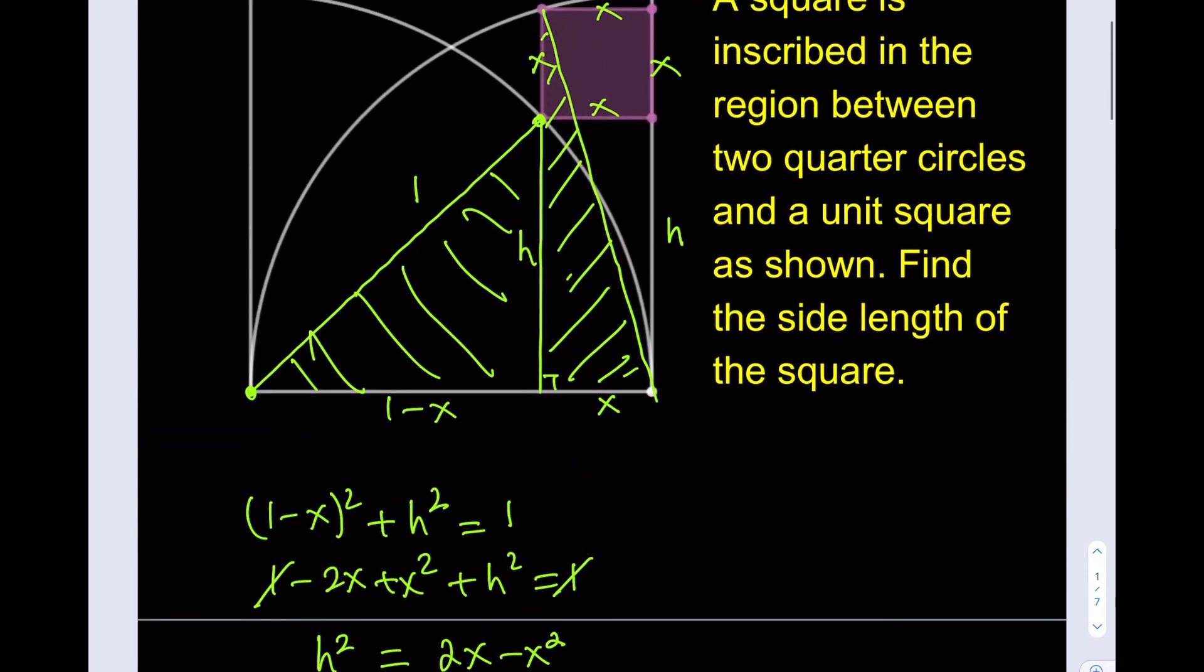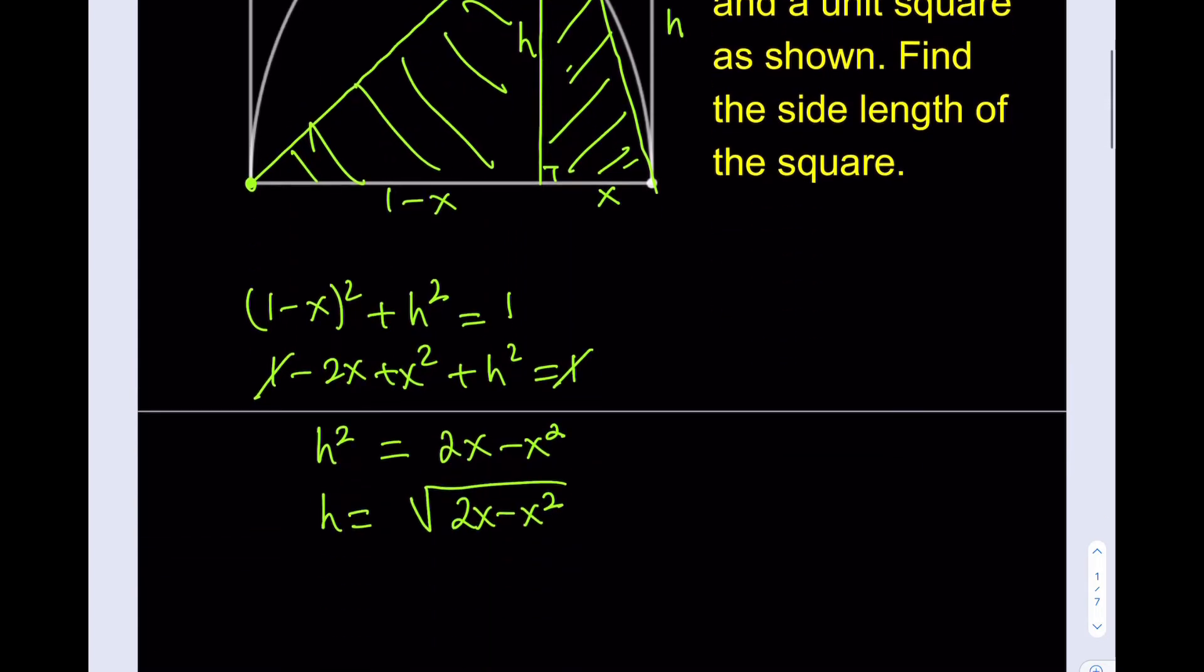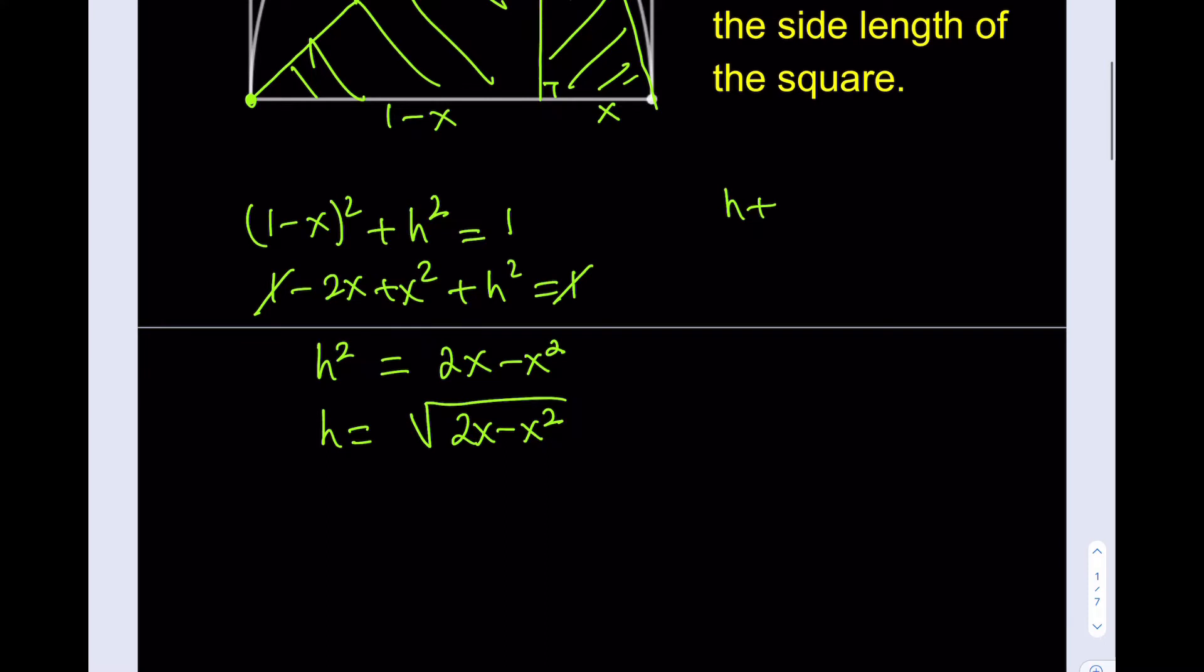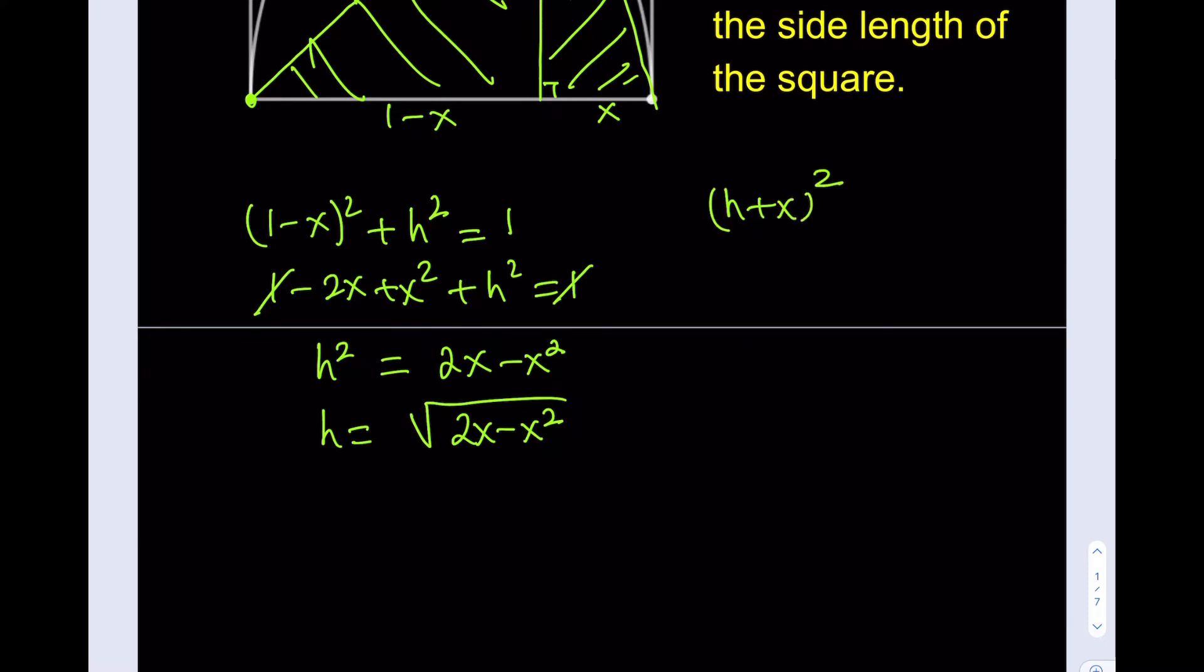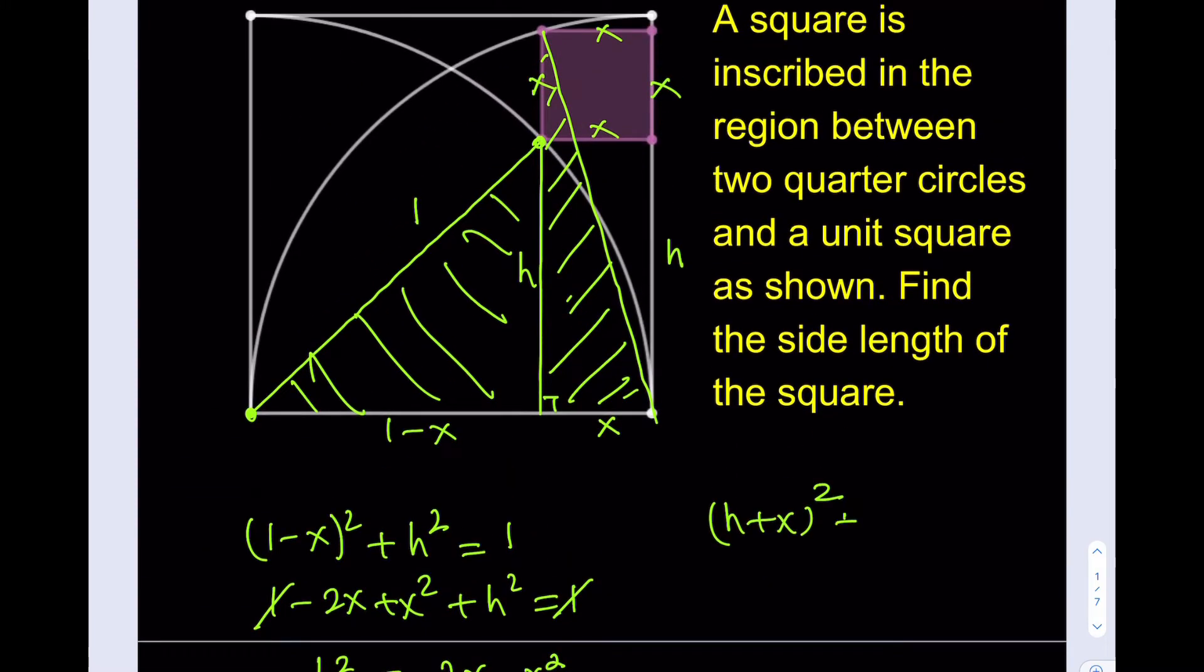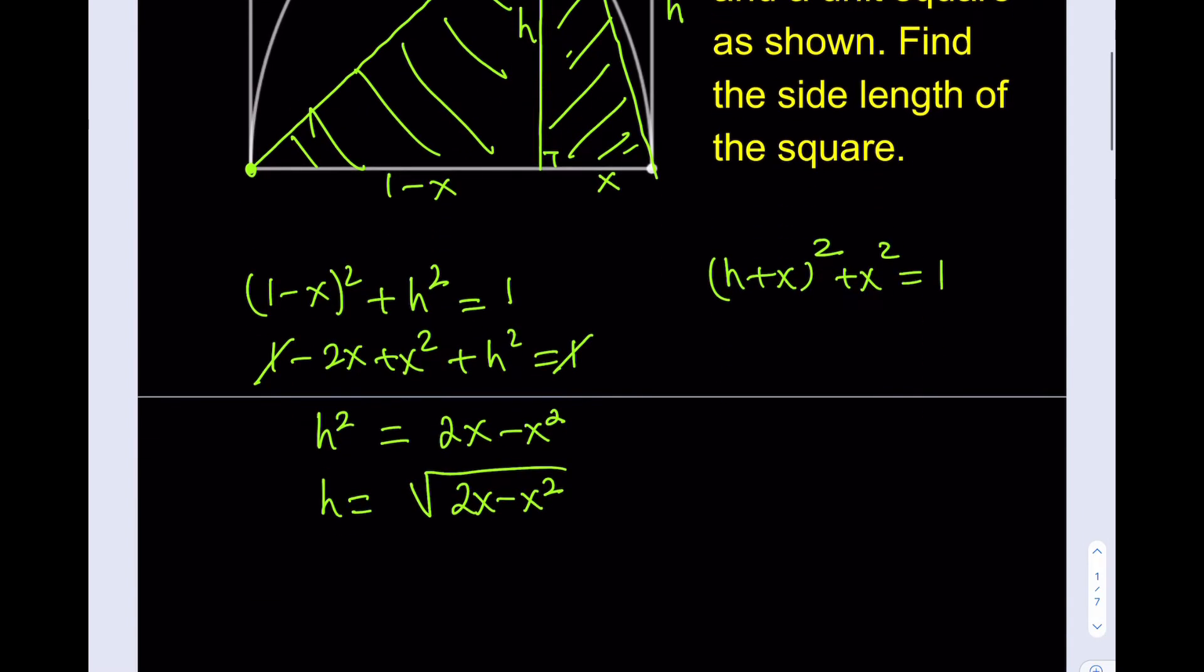Let me write down the second equation. h plus x. We have h plus x squared, plus x squared, which is the base. And the hypotenuse again is one. Now what I'm going to do is use this in the other equation, substitute that, and I'll be getting hopefully x from here.